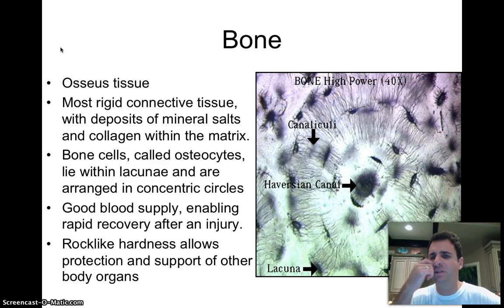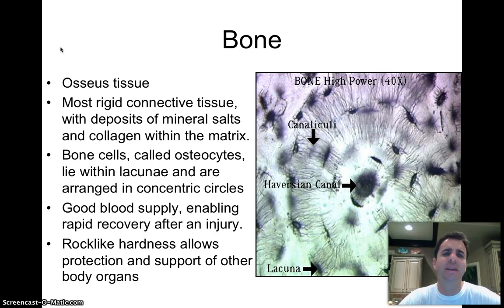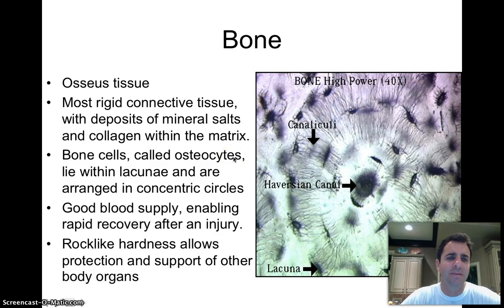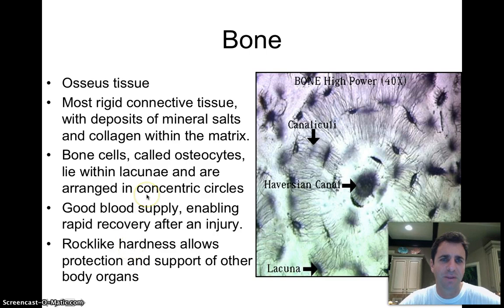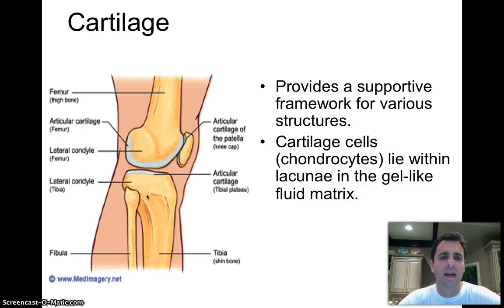Bone — we won't get into too much detail here. The main thing to point out is that bone cells are called osteocytes. Bone has a really good blood supply, so if you break a bone you can recover rapidly — the bone will heal quite well. It is of course the most rigid connective tissue. Cartilage is the next one in line.